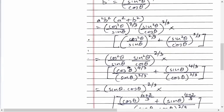We'll separate the numerator and denominator. Numerator becomes cos theta raised to 4/3, sine theta raised to 2/3. Denominator: sine theta raised to 4/3 and cos theta raised to 2/3.